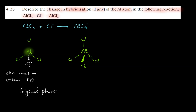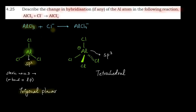We can see a tetrahedral geometry here. In AlCl4⁻, aluminium carries a minus charge. There are 4 bonds, and the hybridization is sp3. So the geometry becomes tetrahedral. The change to describe is: in AlCl3, aluminium has sp2 hybridization with trigonal planar geometry. When it reacts with Cl⁻ to form AlCl4⁻, the hybridization changes to sp3, and the geometry becomes tetrahedral.